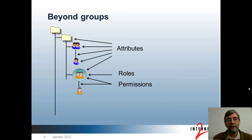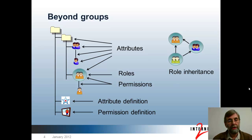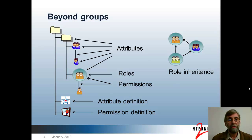Beyond groups, Grouper also has attributes, roles, and permissions. Attributes themselves are objects like groups and folders — they are located in folders, so you can delegate who has what permission to create attributes. You can define those attributes and decide who can assign them to what. Attributes can be assigned to a variety of different things in Grouper, including folders, groups, memberships, members, and roles.